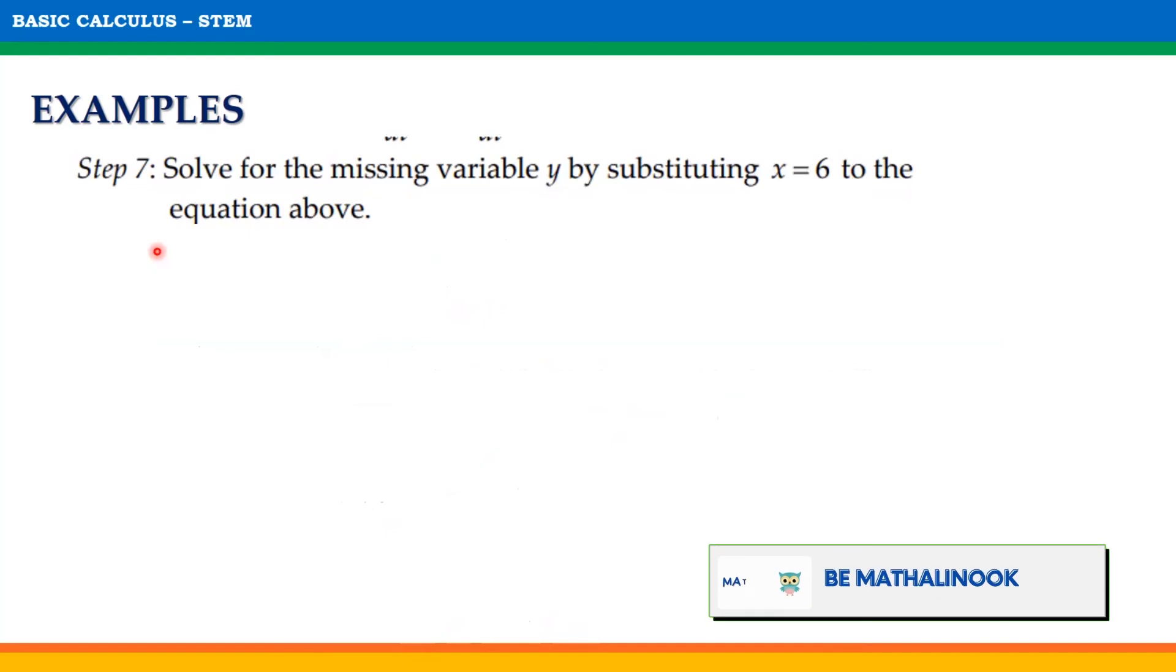Step 7: Solve for the missing variable y by substituting x = 6 to the equation above. That will be 6² + y² = 100. And 6² = 36, so y² = 100 - 36 = 64. Thus, y = 8.